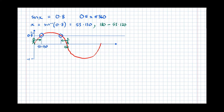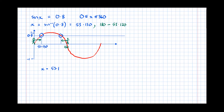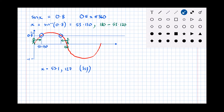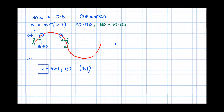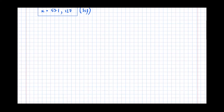We should always conclude to three significant figures, unless asked otherwise. So we have our two solutions: x equals 53.1, and 180 minus 53.130 equals 127 to three significant figures. In an exam, you could lose marks for giving too many or too few solutions, so make sure your final answer is quite prominent — put a box around it so the marker knows exactly what your final answer is.